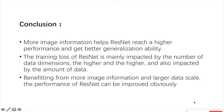In conclusion, we found three interesting things over the project. The first is that more information given helps ResNet reach higher performance and better generalization ability. The second is that the training loss of ResNet is mainly impacted by the number of data dimensions, but as the amount of data increases, the training loss increases as well. The last finding is that, benefiting from more image information and larger data scale, the performance of ResNet can improve a lot. That's all — thanks for watching.